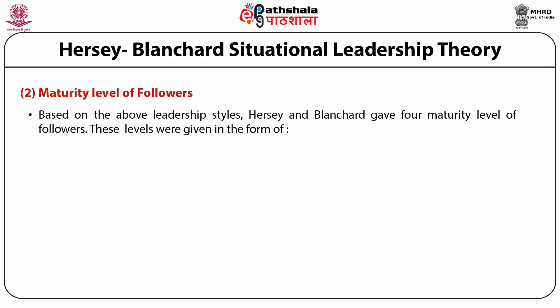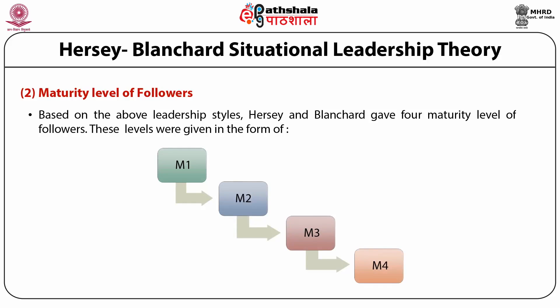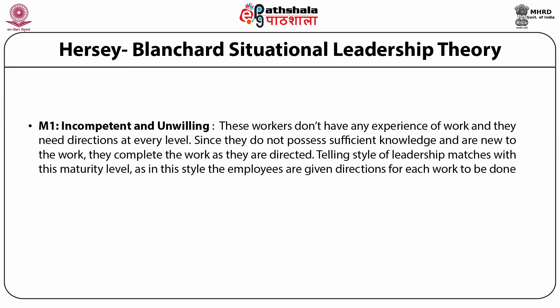The next thing given by the two scholars are maturity levels of the followers. Hersey and Blanchard gave four maturity levels in the form of M1, M2, M3 and M4. M1 represents incompetent and unwilling workers. These workers don't have any experience and need directions at every level. Since they do not possess sufficient knowledge and are new to the work, they complete the work as they are directed. Telling style of leadership matches with this maturity level.